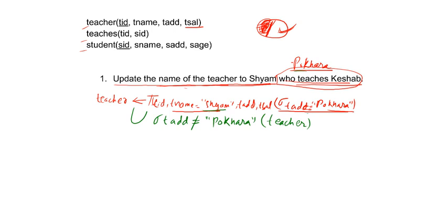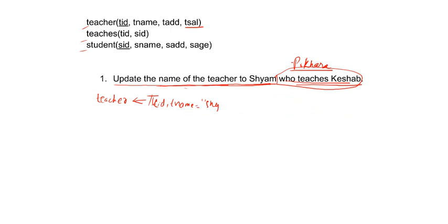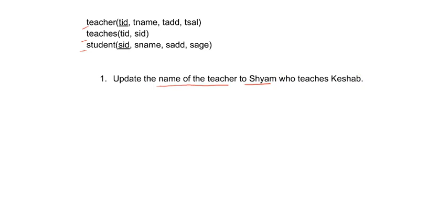This updates all teachers from Pokhara to the name Sam, but our original question is different. The original question says: update name of the teacher to Sam who teaches K sub. The condition involves the student's name, which is in another table. So obviously you have to perform a join. Since there is no common attribute between teacher and student directly, you must include the teaches relation and join all three tables.